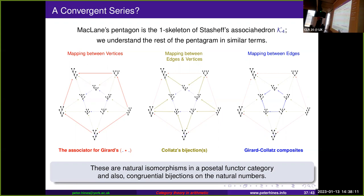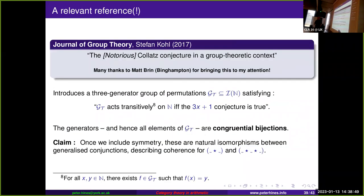Question from the audience: have you considered symmetries and looking at the permutohedral associated with them? Yes — I always make more slides than I have time for. Let me jump forward two slides to show where symmetry comes in. As soon as we add symmetry as well as associativity, we go from the original Collatz problem to the notorious one.